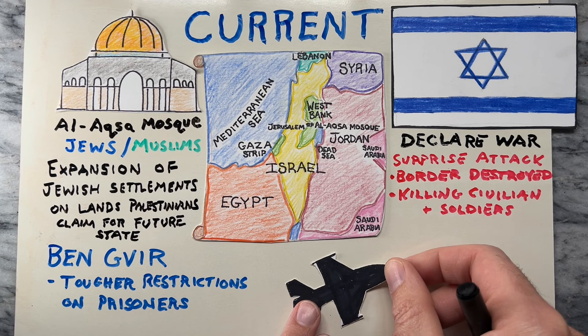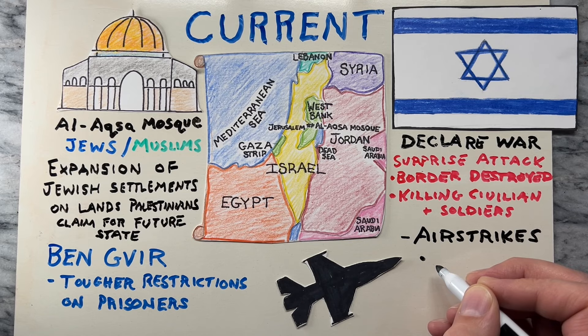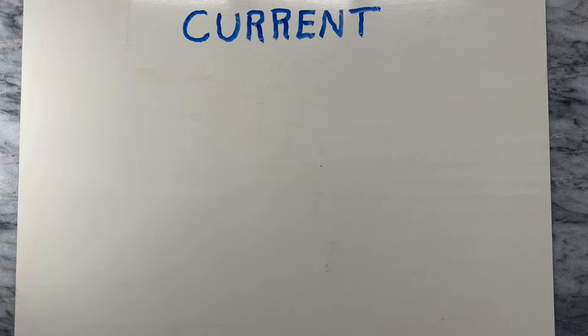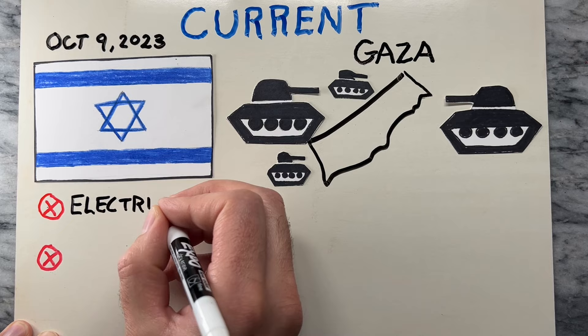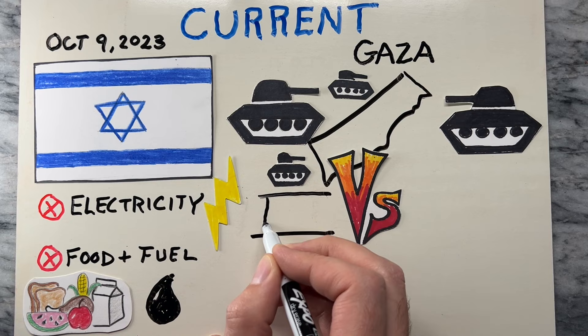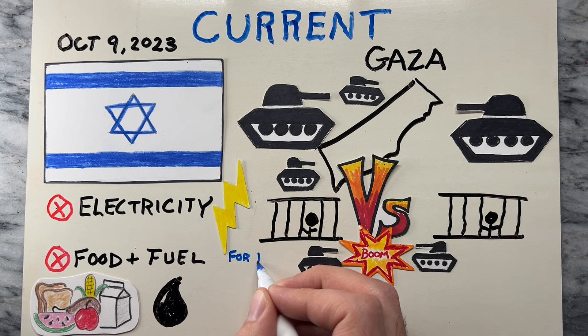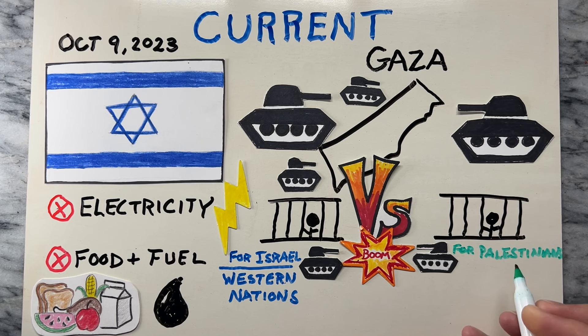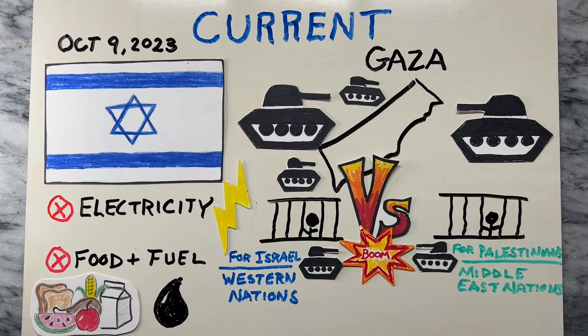Israel continues to strike back with airstrikes on the Gaza Strip, including one that flattened a 14-story tower that held Hamas offices. On October 9, Israeli Defense Minister said that he has ordered a complete siege on Gaza, with authorities cutting electricity and blocking the entry of food and fuel to the Palestinian territory. There continues to be captives held on both sides and isolated conflicts arising in the area. Several western nations have voiced their support and solidarity for Israel, while many nations and groups in the Middle East have shown support for Palestinians and Hamas's fight against Israel.